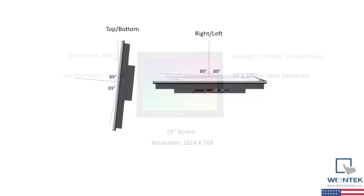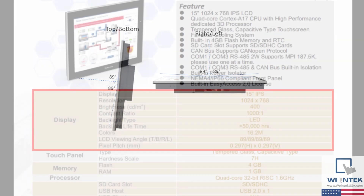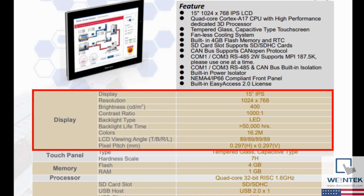LCD viewing angle represents the angles from top, bottom, left, and right where the contrast is still acceptable, which is 89 degrees for all four sides. Pixel pitch represents the distance in millimeters between each individual LED. A smaller distance will provide a clearer image.